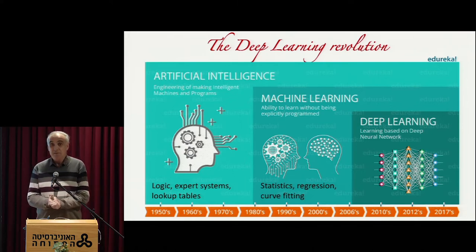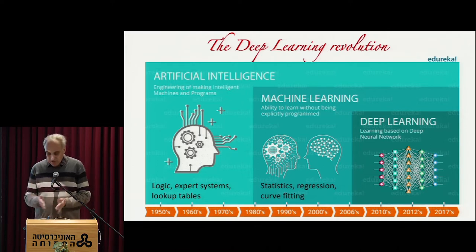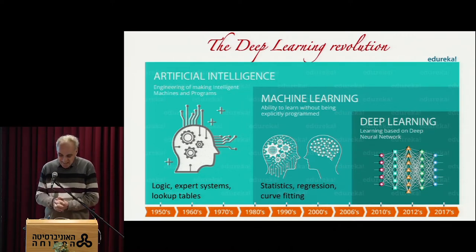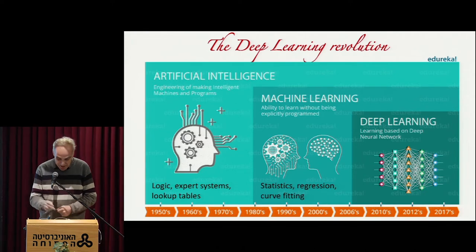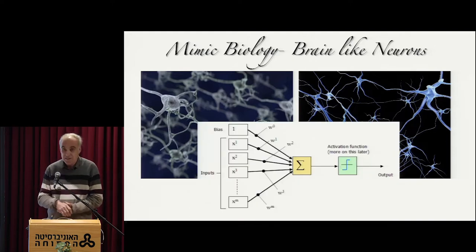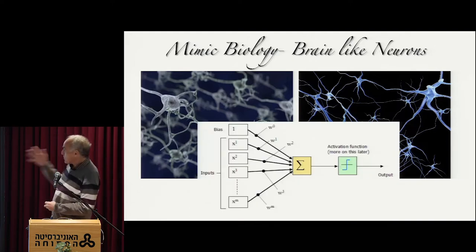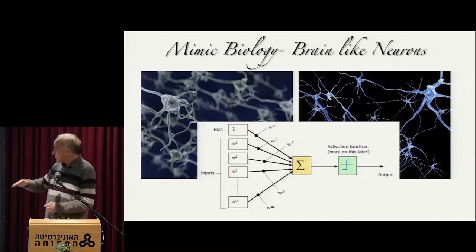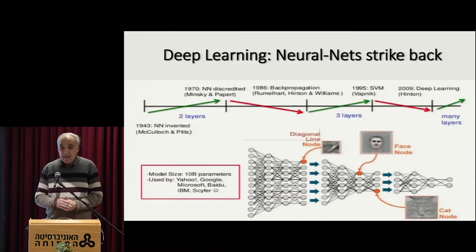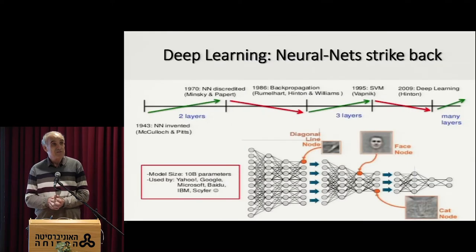Something very surprising happened about 10 years ago when models which are essentially deep neural networks — many, many layers of neurons which are essentially just linear special functions, dot products with adjustable weights going through some non-linearity connected with many layers — essentially changed the picture of AI from being a rather pathetic failure to something which seemed to work everywhere.